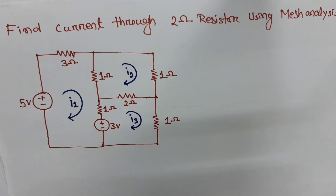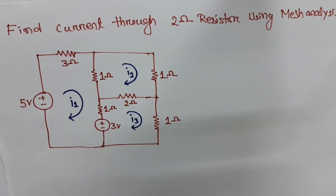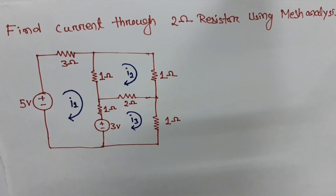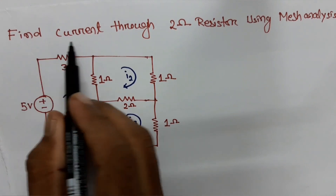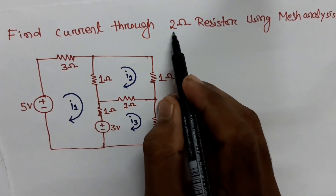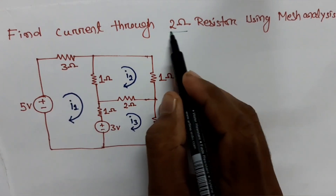Welcome to my YouTube channel Electrical Boost. Today we are going to learn how to solve a problem using mesh analysis method. The question is: find the current through the 2 ohm resistor using mesh analysis.